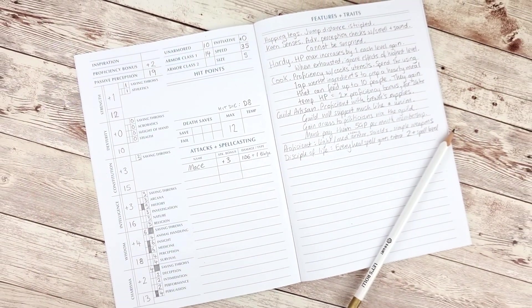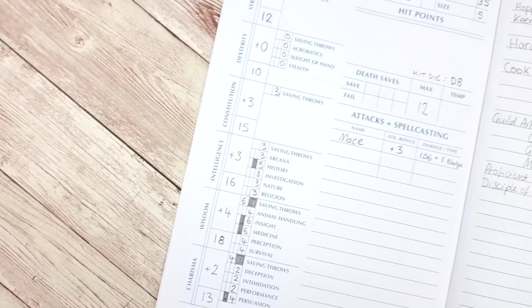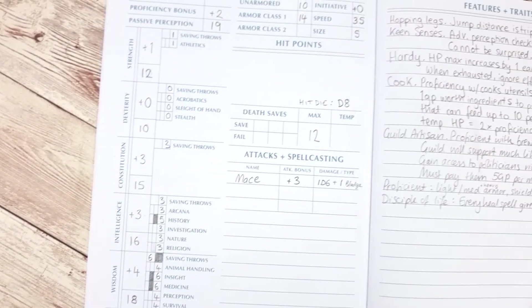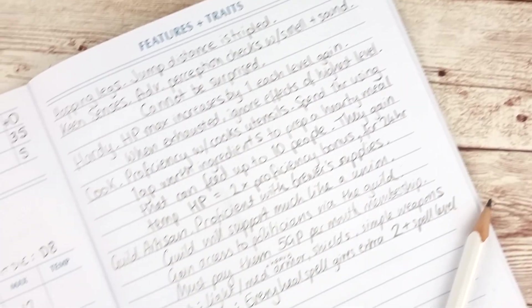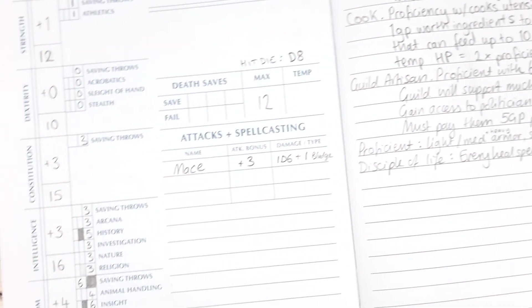As you level up some of these numbers will change and you will gain more features from your class as you go. This means it's always good to leave plenty of space or have an extra sheet on hand to make sure there's enough room for all the features. And remember always use a pencil.